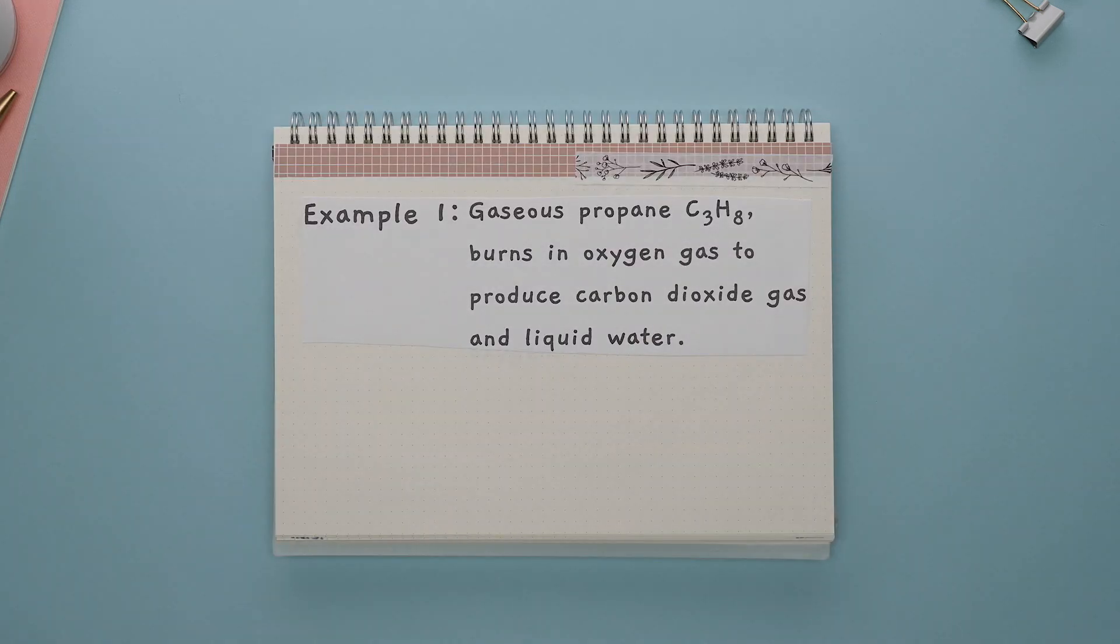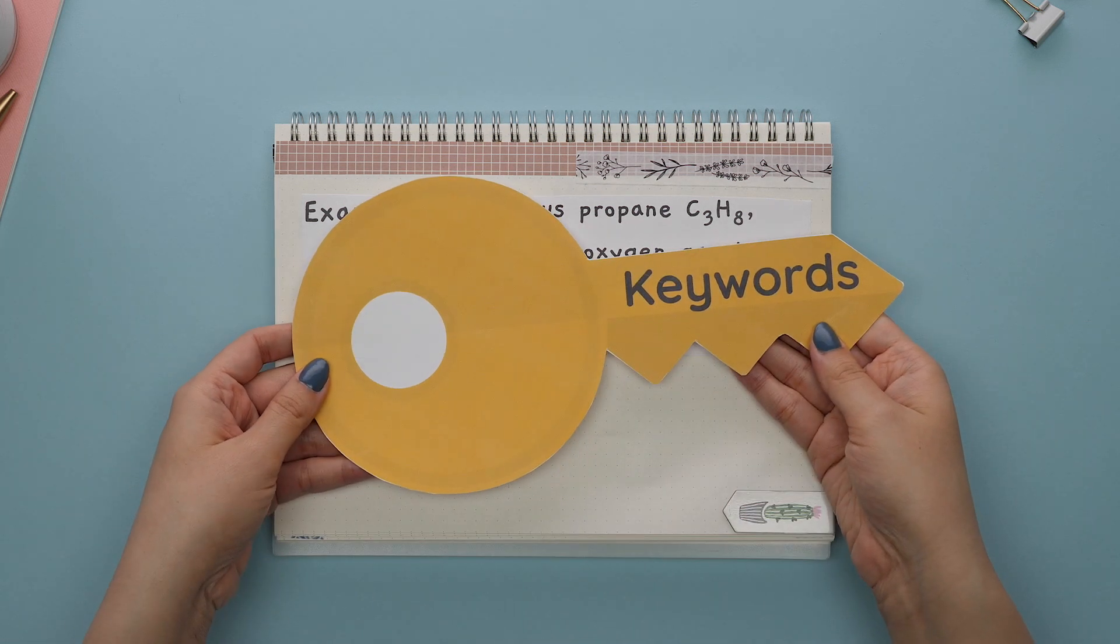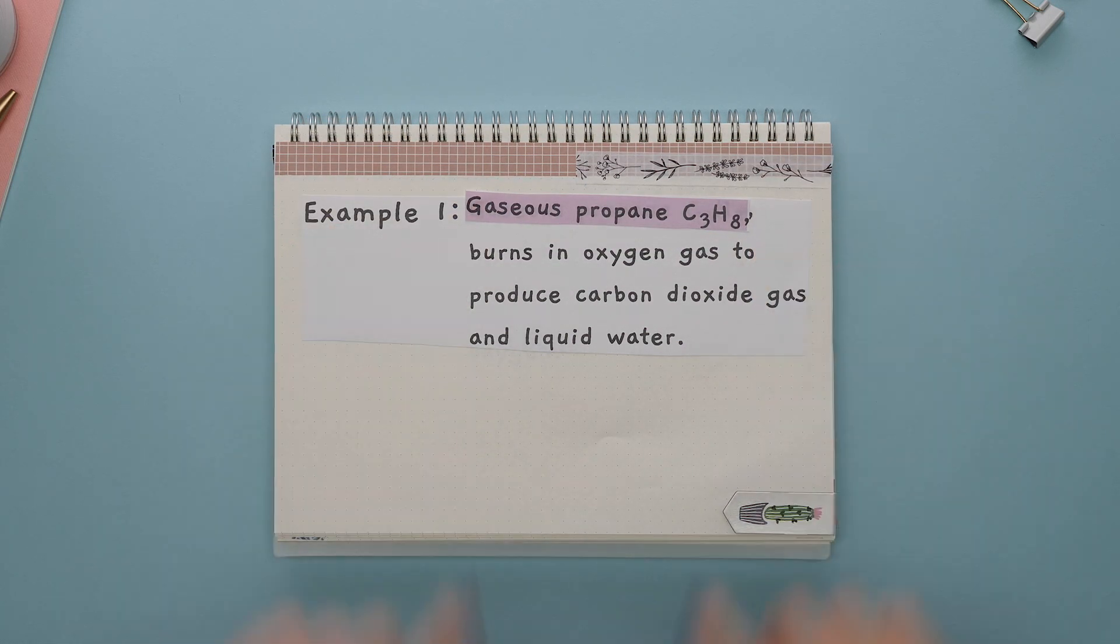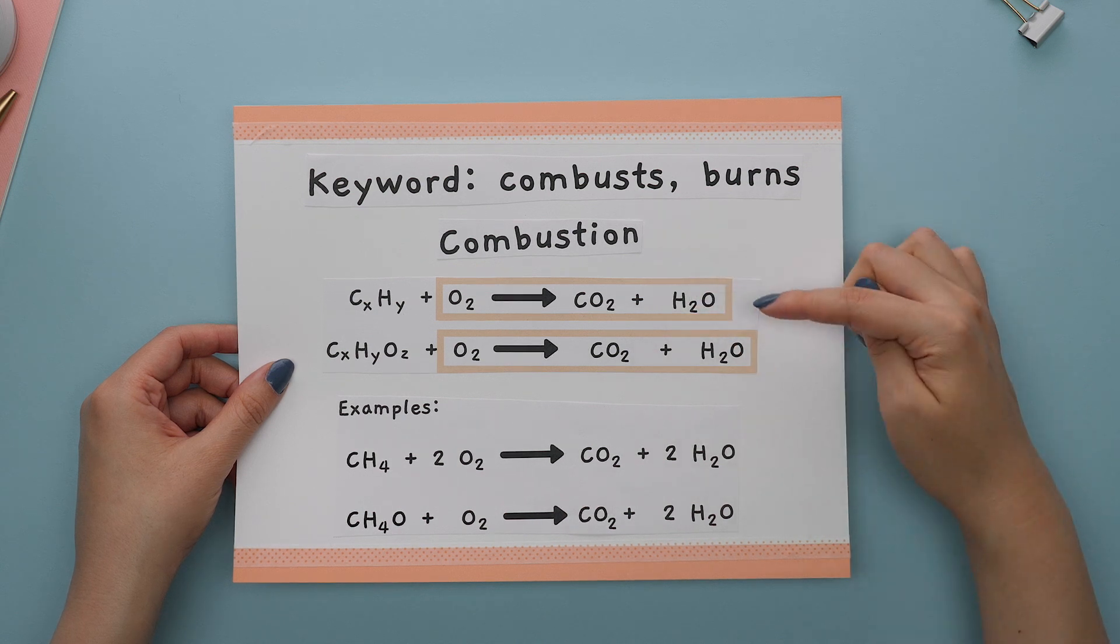Let's translate this word problem into a balanced chemical equation. Note for this video, I'm not going to get into how to balance chemical equations, just how to translate them. And I won't go over how to name compounds, but I will have the links to my videos that do cover this in the description. This question states, gaseous propane C3H8 burns in oxygen gas to produce carbon dioxide gas and liquid water. Start with identifying the keywords. The word gaseous tells us C3H8 is a gas. Next, the keyword here is burns. Burns tells us the type of chemical reaction. This is a combustion reaction, so it will look like this.